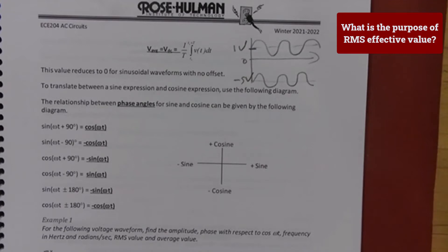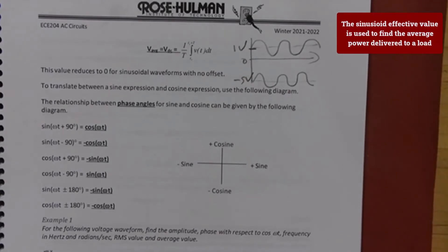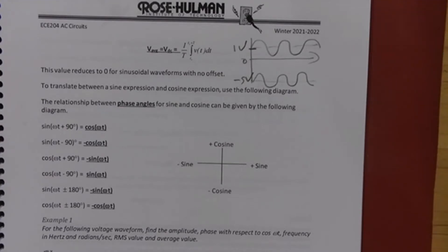When we talk about power, you'll care about the average power delivered to a device. For a resistor, the effective value from an AC source matches the DC equivalent. For example, a five-volt battery delivering power to a one-ohm resistor gives five watts. A five-volt AC sinusoidal source using its RMS value delivers that same five watts to the resistor.